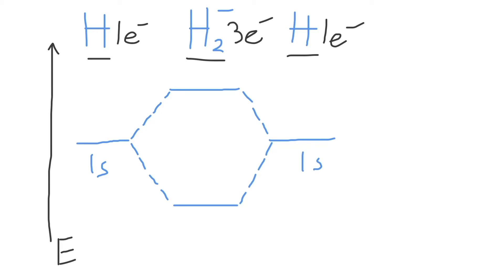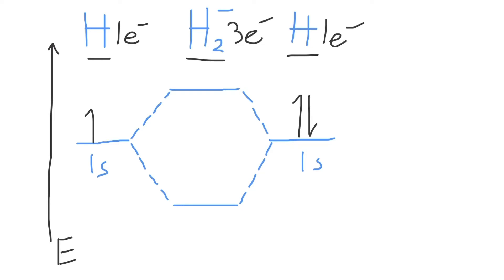We'll start by filling in one electron for the hydrogen on this side, and then one for the hydrogen on the other side — it doesn't matter which side you put the second electron on. The bottom molecular orbital is called the bonding molecular orbital; it is lower in energy and is called the sigma 1s molecular orbital. The top one is called the antibonding molecular orbital, denoted sigma 1s star.